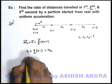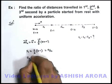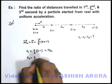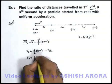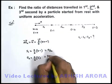If we find out s2, that is in the second second of motion, again u is zero, we take (a/2)(2×2-1) which is 3, so it is 3a/2.